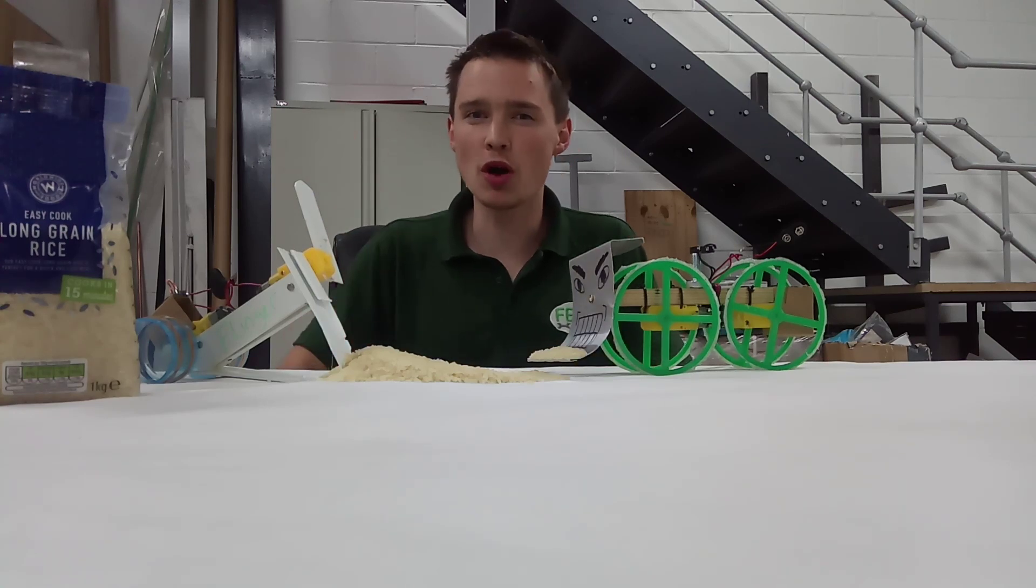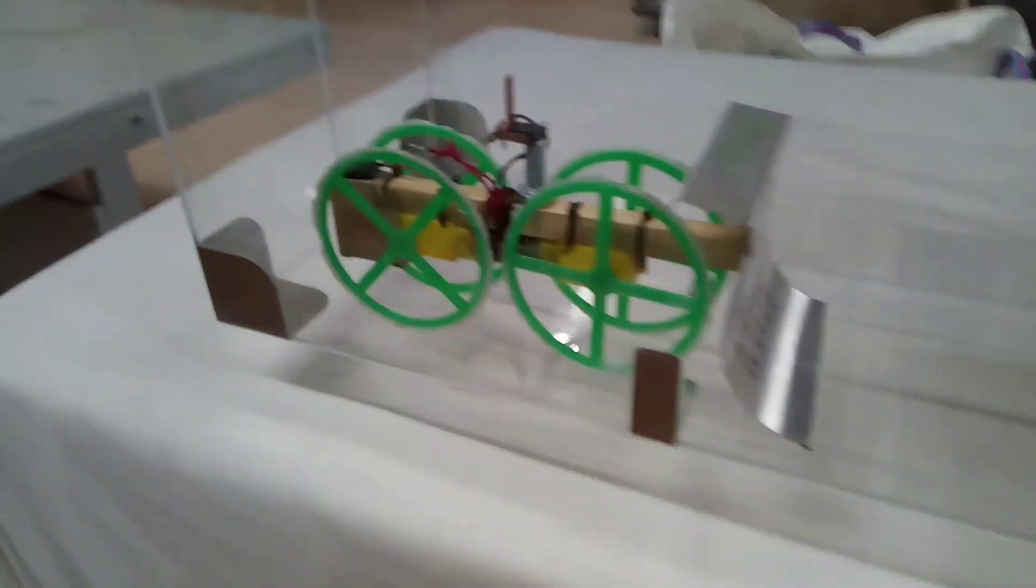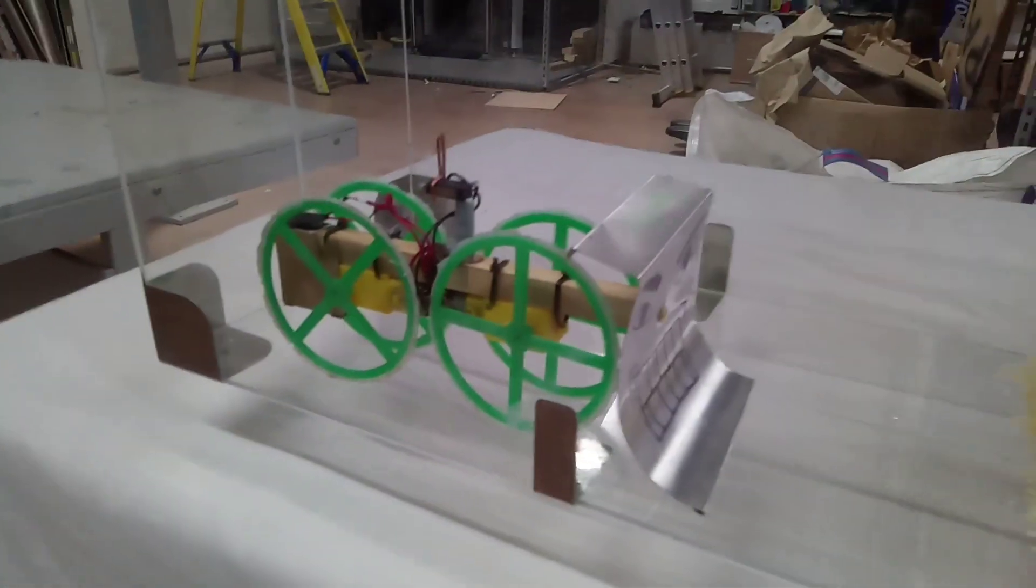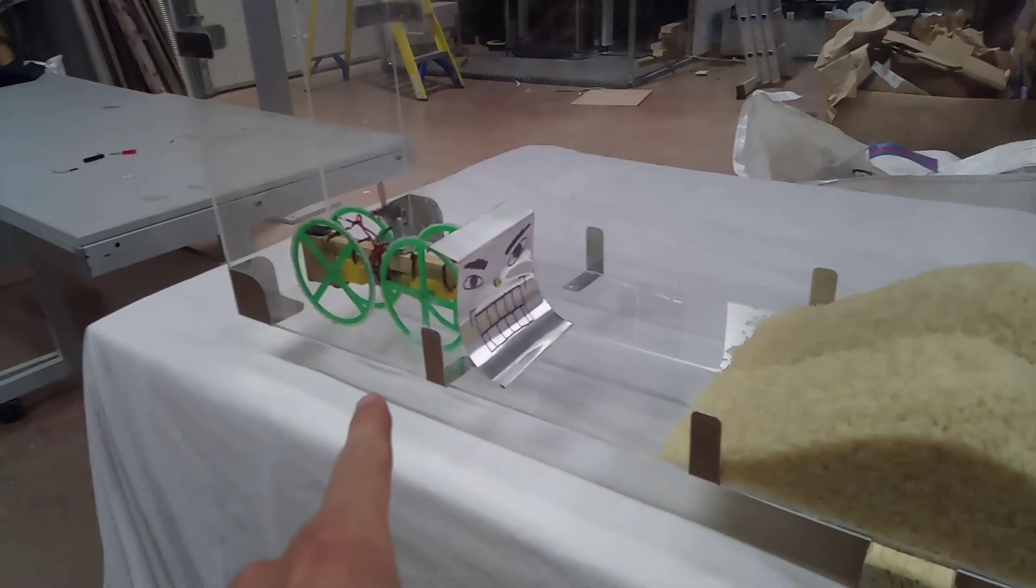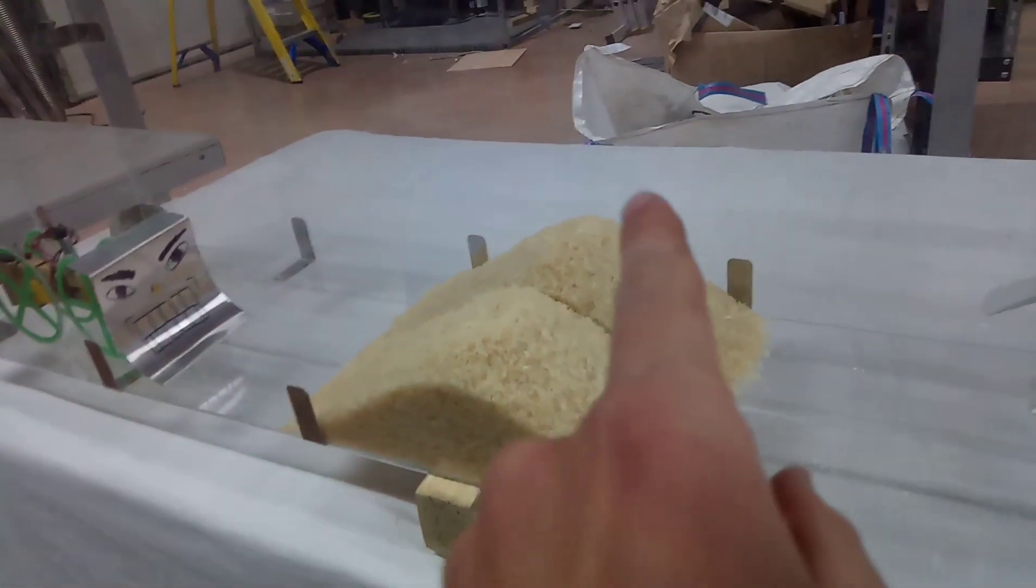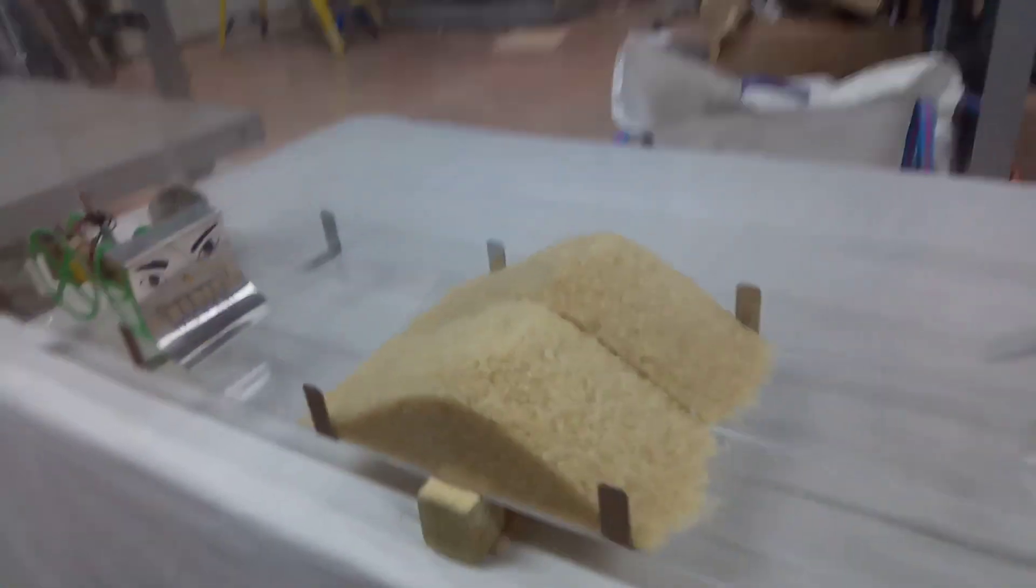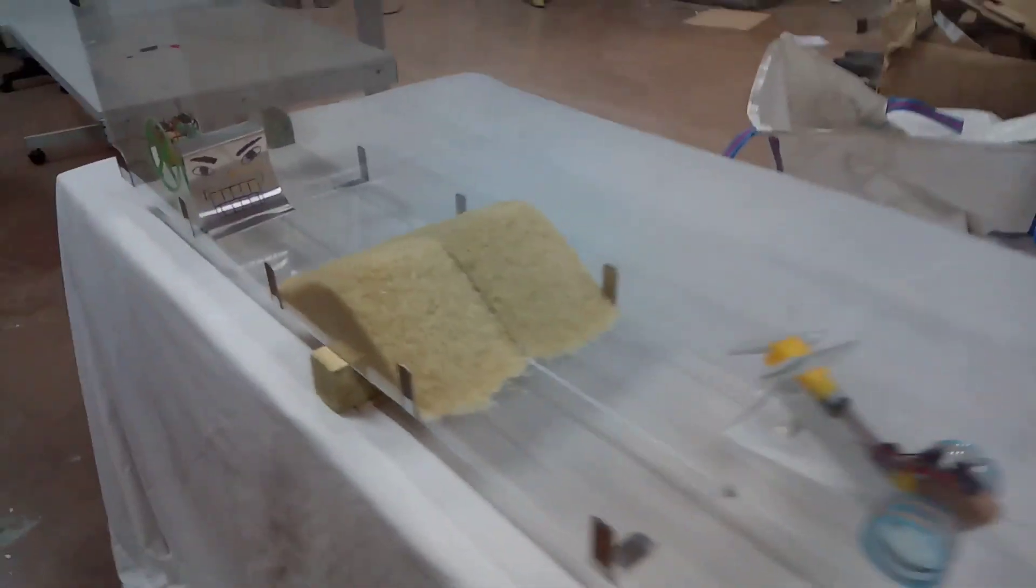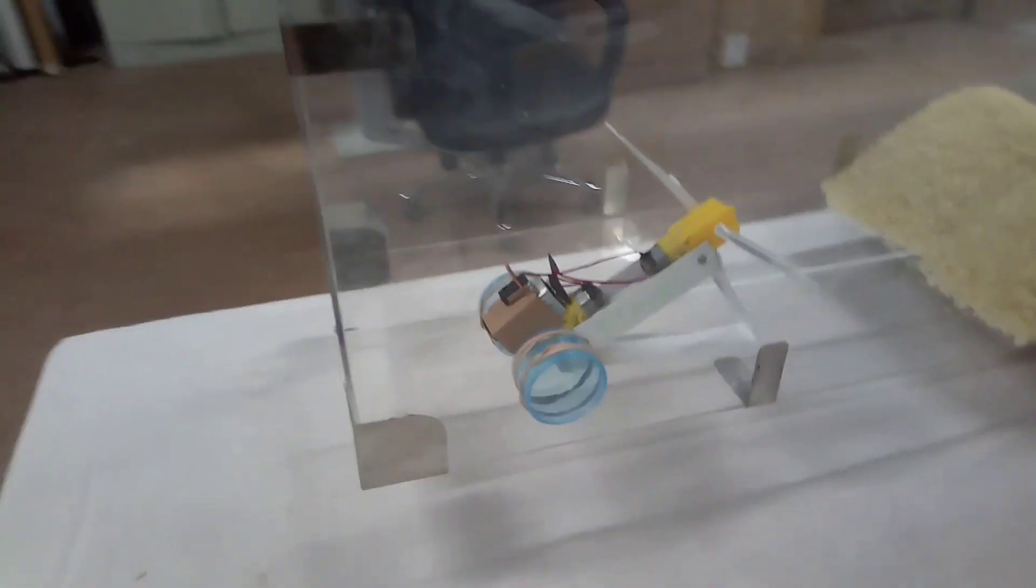This is how the arena will be set up for the start of every competition. One bot will be placed at this end in the left-hand channel. We have two piles of rice divided by a piece of perspex in the center, and then the other bot will be placed in the right-hand channel.